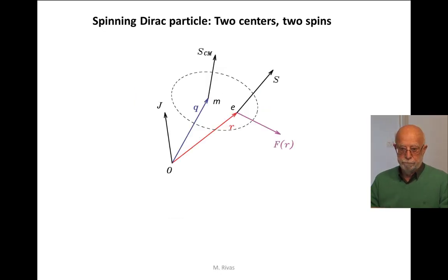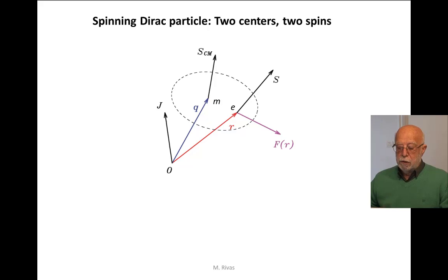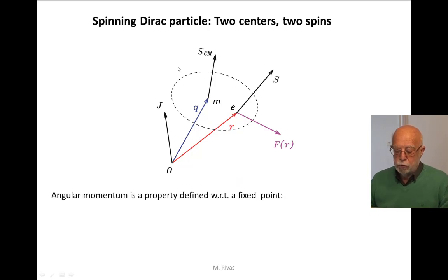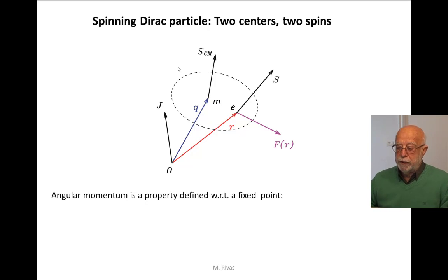Now, the quark is a Dirac particle. If it is a Dirac particle, it has the following feature: the Dirac particle has two centers — the center of mass M and the center of charge. Because the angular momentum is always a mechanical property defined with respect to some fixed point, if we have two points, two centers, we will have two different spins.